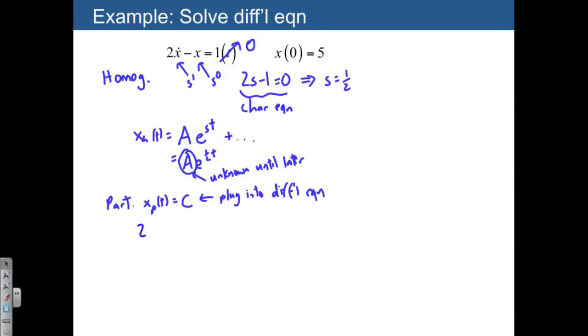So let's do that. We have 2xp dot minus xp is equal to 1. That's what I mean by plugging the particular solution back into our differential equation up above, including the inputs. Now c is a constant, so xp dot is going to be 0, whereas we're going to be stuck with xp.